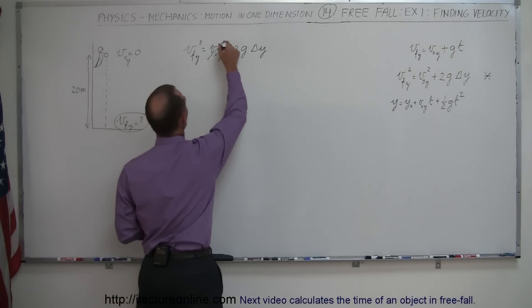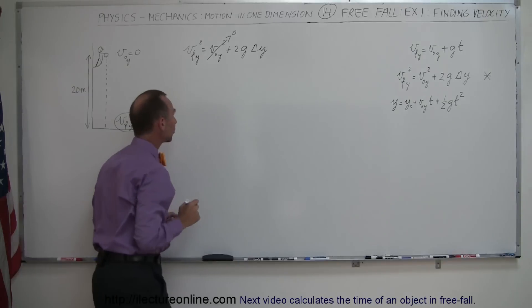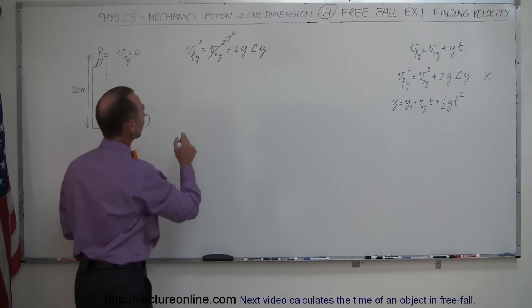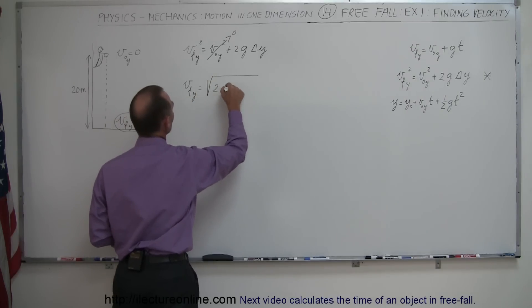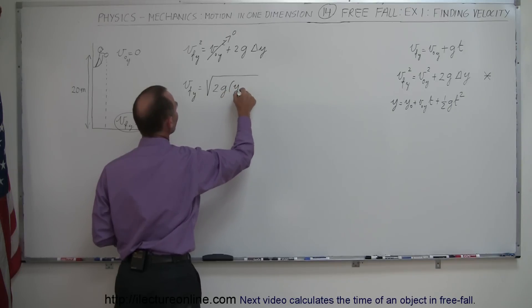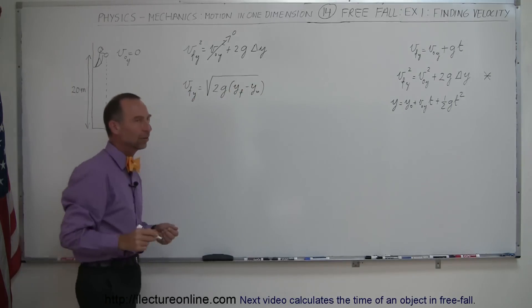Right away, we can say there's no initial velocity in the y-direction, so all we have to do is take the square root of both sides. v-final in the y-direction equals the square root of 2g times (y-final minus y-initial). That's the difference in height.